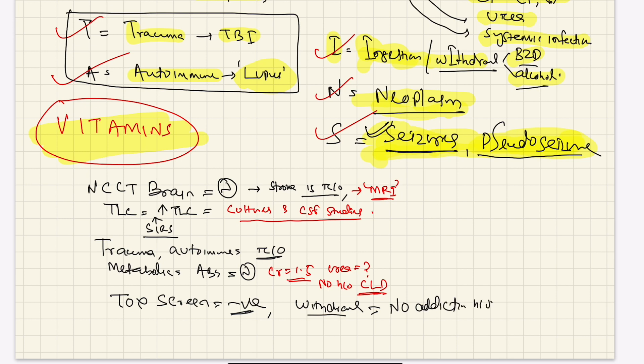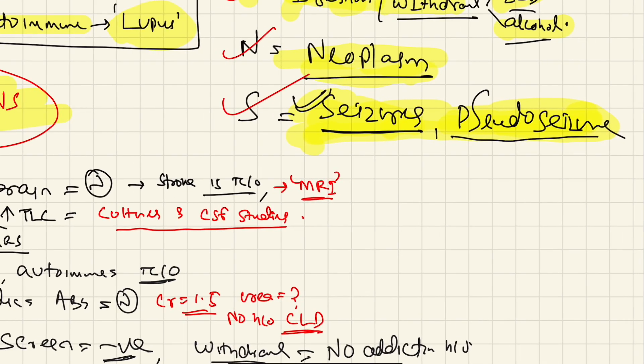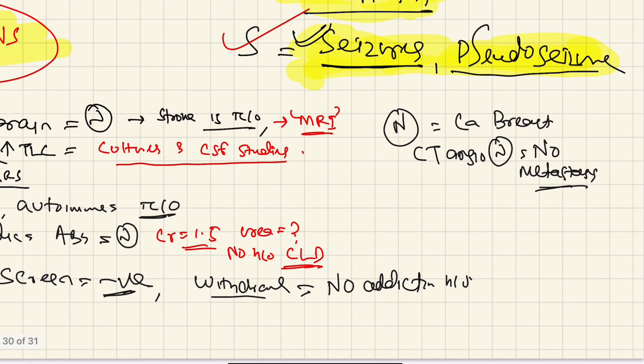Then N for neoplasm. Patient is definitely in this case having CA breast, but because the CT angio is normal - that means contrast angio is normal - that means there is no metastasis, there is no space-occupying lesion in the brain. So this also has been ruled out. Now seizure can be a probability.